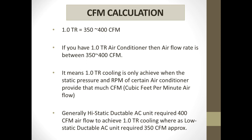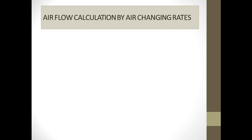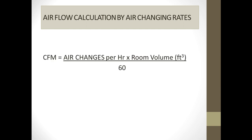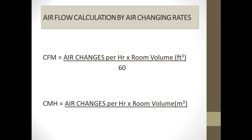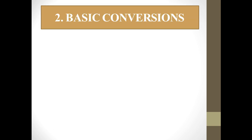Generally, a standard ductable AC unit requires 400 CFM airflow to achieve 1 TR cooling, whereas a low-static ductable AC unit requires approximately 350 CFM. For airflow calculation by air changing rates, the formula is: CFM = (Air Changes Per Hour × Room Volume in cubic feet) / 60, where 60 is the conversion factor from hours to minutes. In metric units: CMH = Air Changes Per Hour × Room Volume in cubic meters.